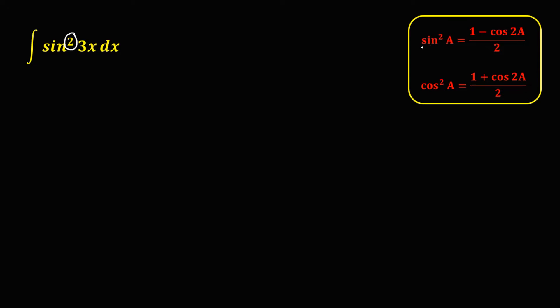So for sine squared a, where a is the angle, we have 1 minus cosine 2a over 2, and for cosine squared a, that's 1 plus cosine 2a over 2. So for this given, sine squared, therefore we're going to use this identity.